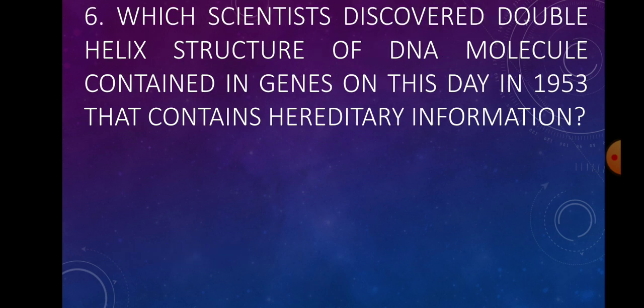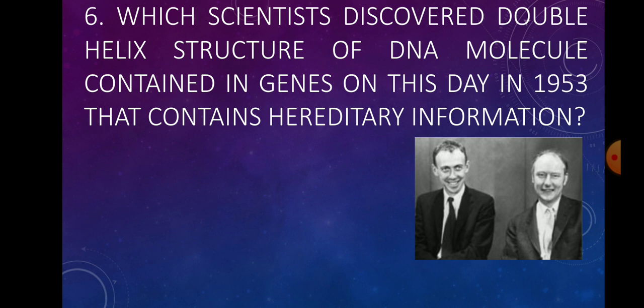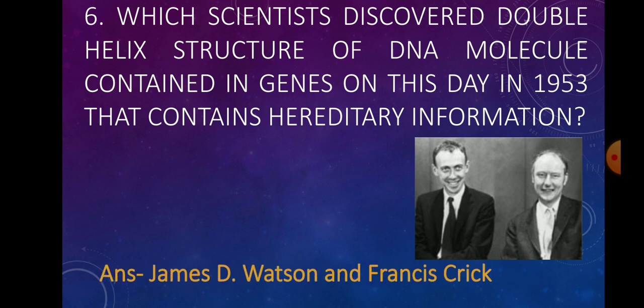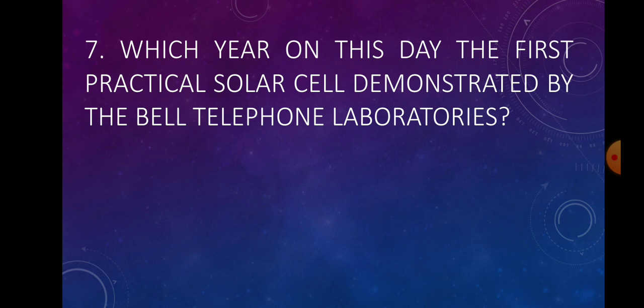Question number six: Which scientists discovered the double helix structure of the DNA molecule contained in genes on this day in 1953, which contains hereditary information? Question number seven: Which year on this day was the first practical solar cell demonstrated by the Bell Telephone Laboratories? Answer: 1954.